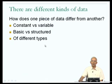Another way in which different data can differ is that data could be of different types. For example, I could have a variable x which is of type integer, another variable y which is of type float, another variable z which is of type character.